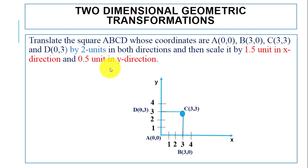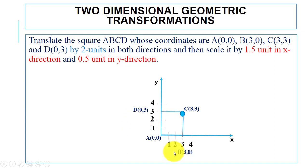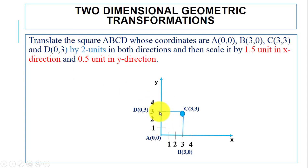Here you can see the square on the 2D coordinate plane. Point A is at (0,0), point B is at (3,0) — x is 3, y is 0. Point C is at (3,3) — x is 3 and y is 3. Point D is at (0,3) — x is 0, y is 3. This is the initial position of the square on the 2D plane.